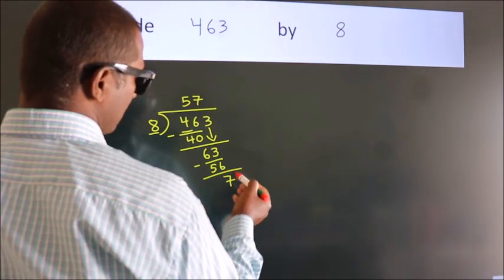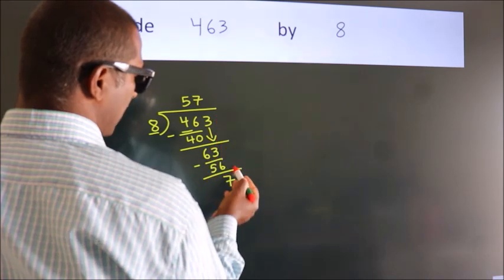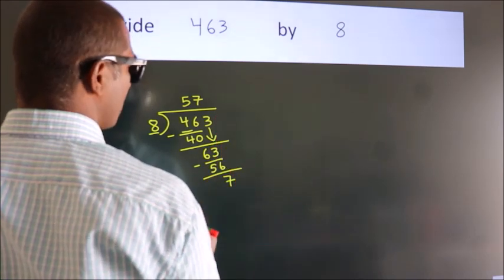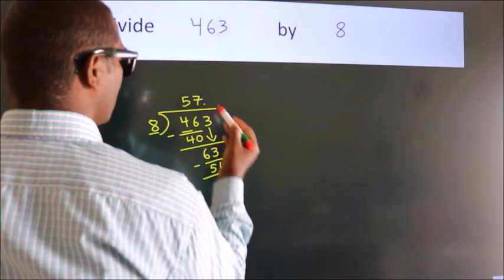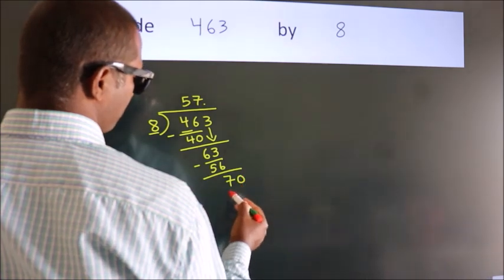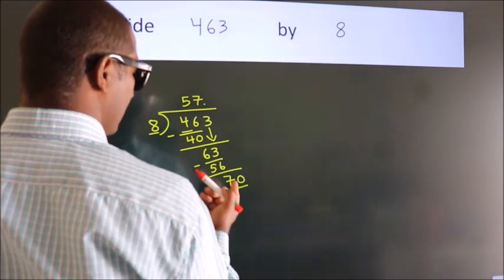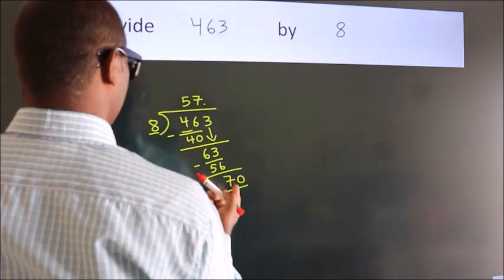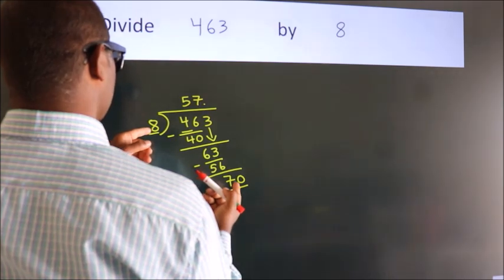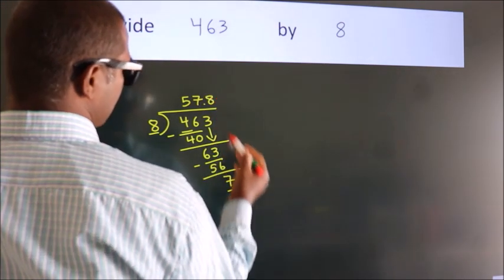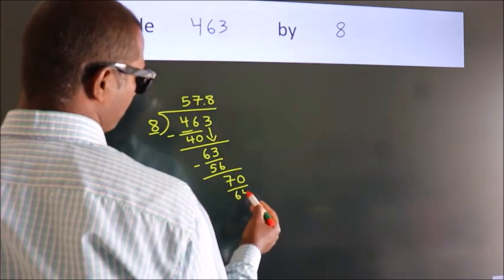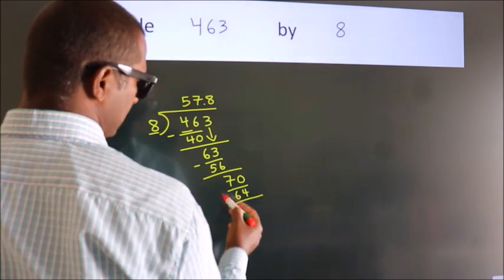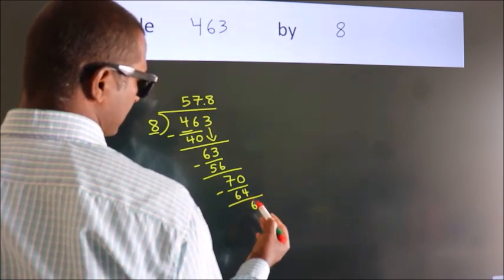After this, no more numbers to bring down. So what we do is we put dot, take 0. So 70. A number close to 70 in 8 table is 8 eights 64. Now we subtract. We get 6.